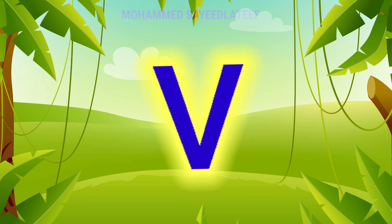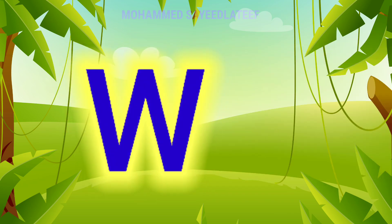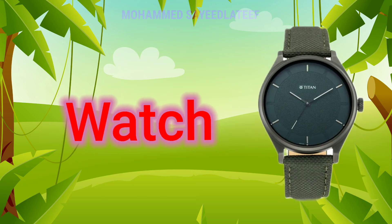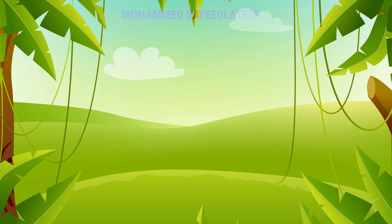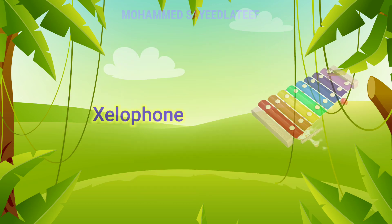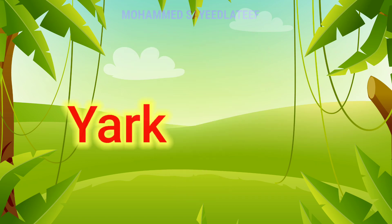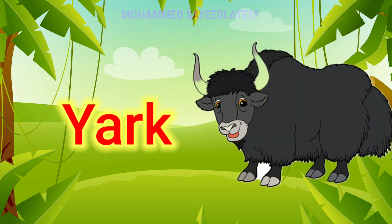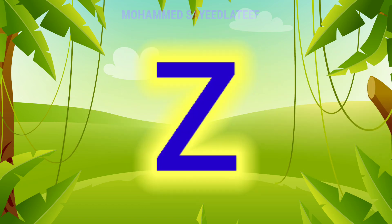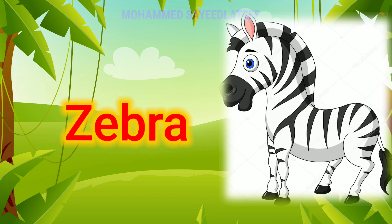U for umbrella, V for van, W for watch, X for xylophone, Y for yarn, Z for zebra.